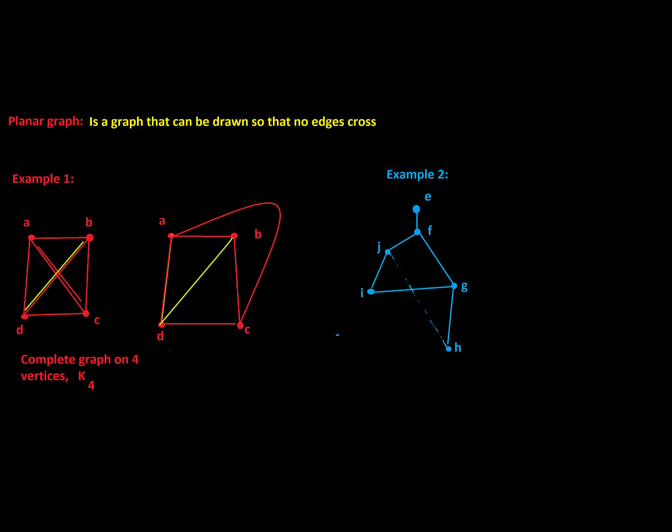And if I get rid of that edge, I need to redraw it. So let's put it in a different color. I need to redraw that edge J to H in a way that goes out and around, and that looks pretty good. That shows the planarity in example two.